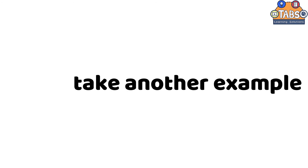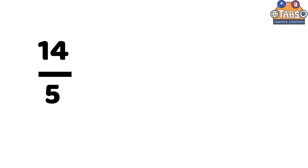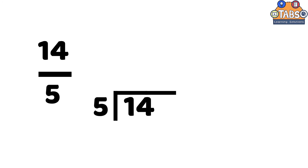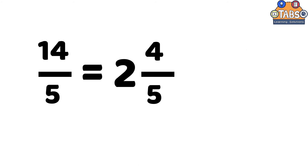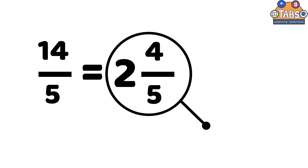Let us take another example, which is fourteen over five. We will divide the numerator by the denominator, so the equation will be fourteen divided by five. Fourteen divided by five is equal to two remainder four. So the quotient will be the whole number, and the remainder is the numerator. After that, just copy the denominator. So the answer is two and four-fifths.